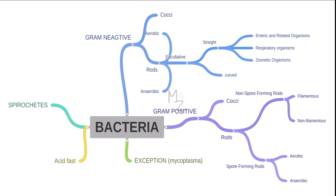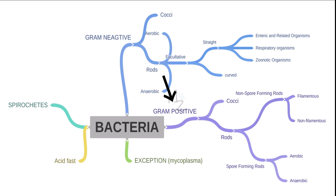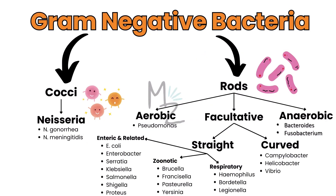Before talking about Haemophilus influenzae in more detail, we should note the bacterial classification. Bacteria are further classified into spirochetes, acid-fast bacteria based on acid-fast staining, with an exception being Mycoplasma. Bacteria are also classified based on gram staining into gram-positive — we are done with all of them if you are interested, be sure to check out the channel — and gram-negative, which are further subdivided into cocci, like Neisseria gonorrhoeae and Neisseria meningitidis.